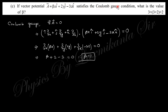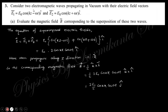Next question: if the vector potential satisfies the Coulomb gauge — divergence of A = 0 — what will be the value of β? Taking the divergence of A = 0 and applying the condition, you can easily find that β = 1.